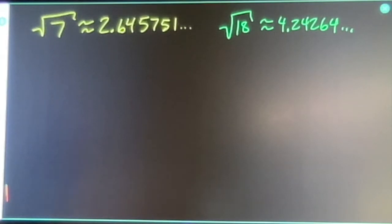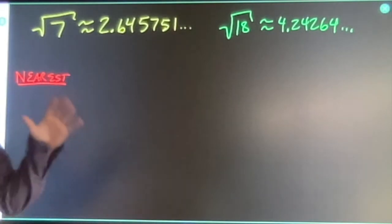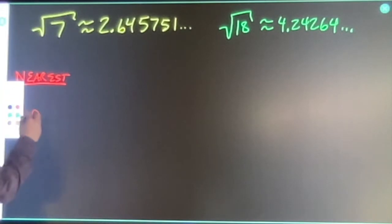Quick recap on rounding. There's three major ways that people round numbers. Inside of school, typically, you're asked to round to the nearest something. Outside of school, depending on the application, typically, people will always round up or always round down.